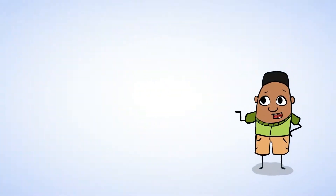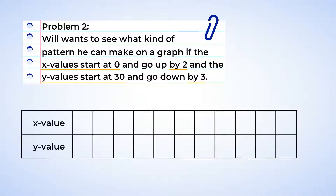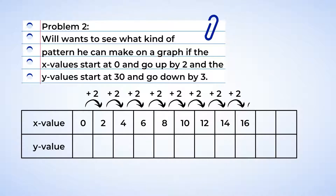Let's help Will out. He wants to see what kind of pattern he can make on a graph if the x values start at 0 and go up by 2, and the y values start at 30 and go down by 3. Sounds like an interesting graph. Let's start by putting the number patterns into a table. Starting with the x values, we'll put 0 and then add 2: 0, 2, 4, 6, 8, 10, 12, 14, 16, 18, 20.